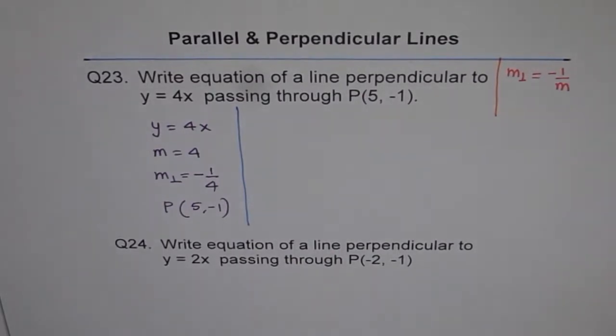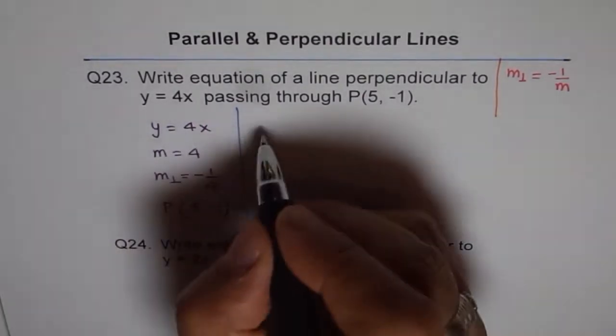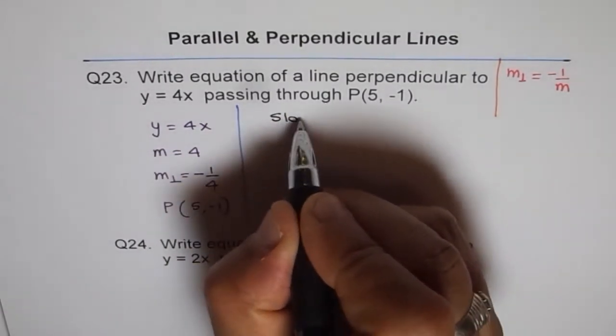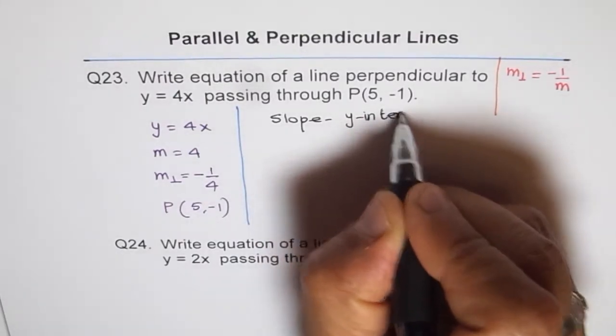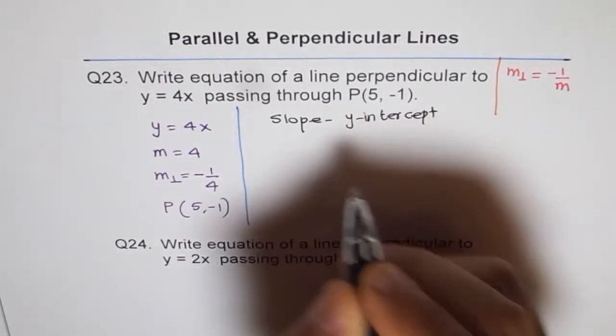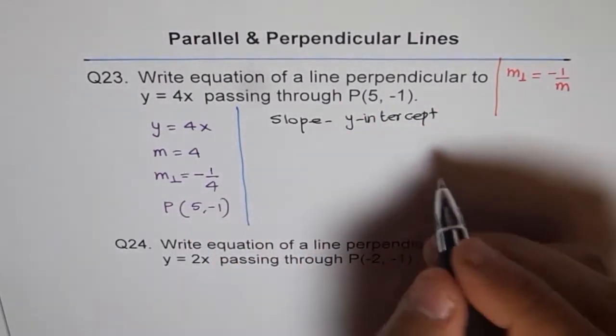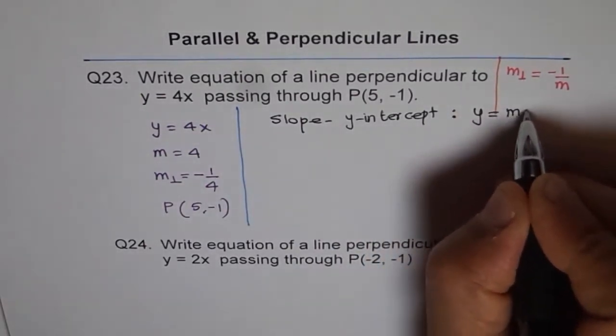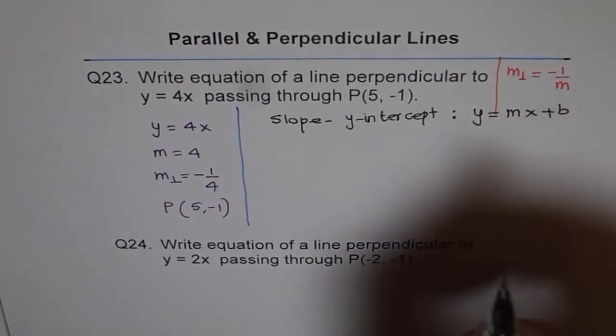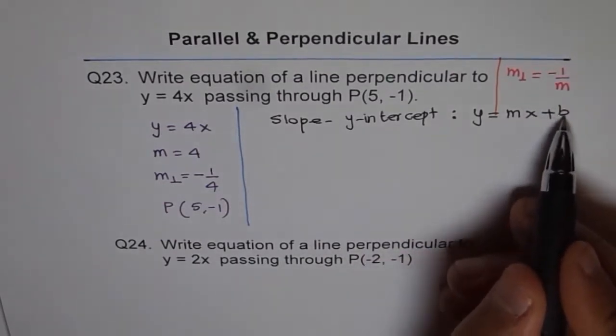So we start by writing general equation of a line. We will use line in slope and y intercept form. What is the equation in slope and intercept form? It is y equals mx plus b, where m is slope and b is y intercept.